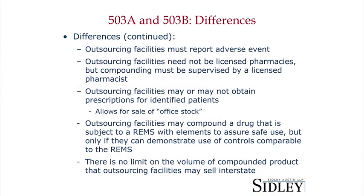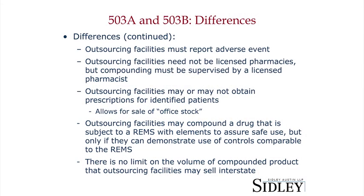Outsourcing facilities may also compound drugs that are subject to a REMS — Risk Evaluation and Mitigation Strategies — which are post-marketing requirements attached to certain products deemed particularly dangerous, such as GHB. So long as the pharmacy can come up with approximately equivalent effective controls, they can compound REMS products. And there is no limit on the volume that outsourcing facilities may sell interstate, which is again very different from 503As, who are expected to operate on a local scale.